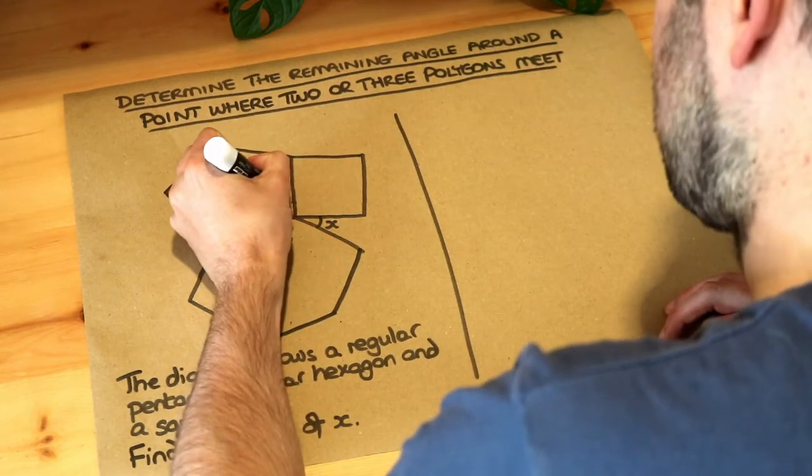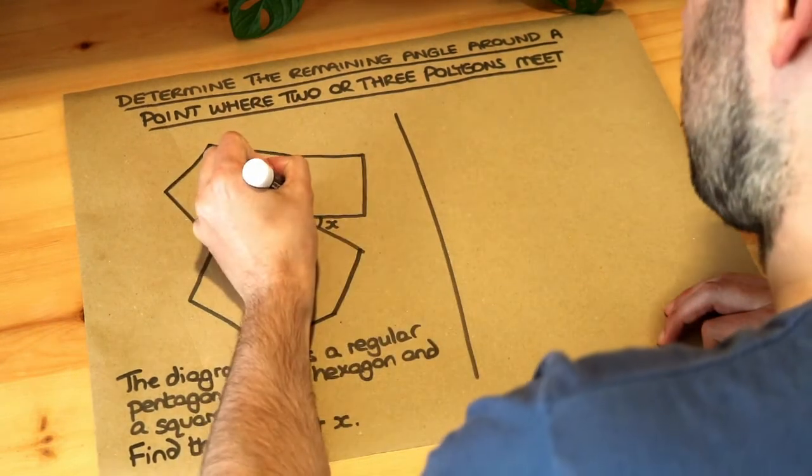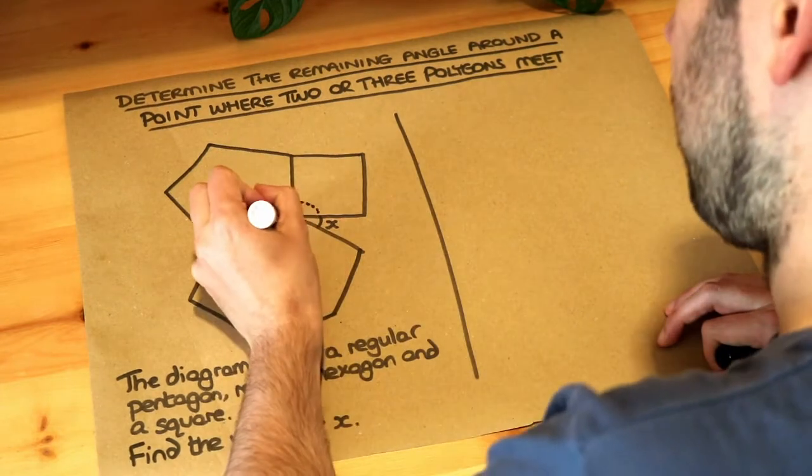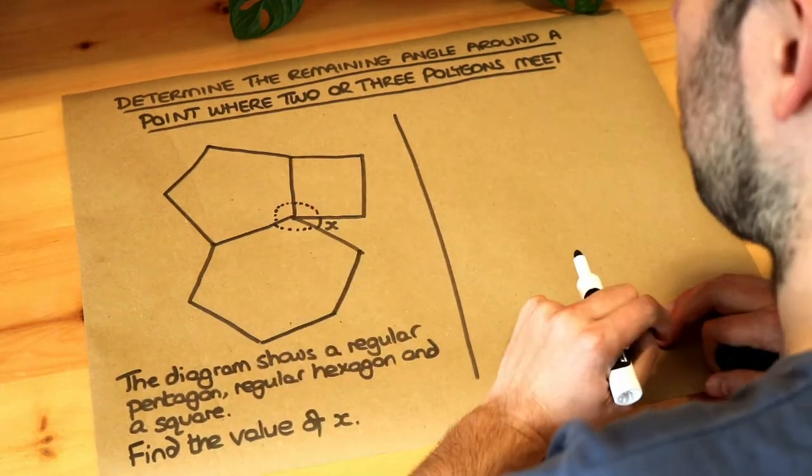So for example we could find this angle here, we could find this angle here and we could find this angle here because they're all interior angles of regular polygons.